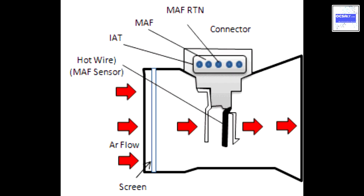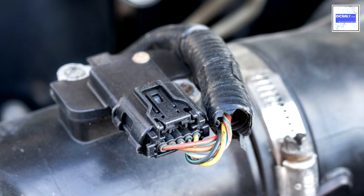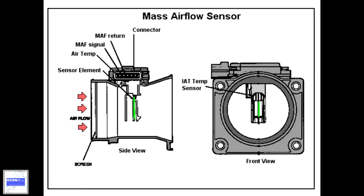A problem with the air flow sensor could also alter the shifting pattern of the automatic transmission. When the air flow sensor signal varies from the expected range, the PCM records a fault and stores the corresponding trouble code, illuminating the check engine light on the dash. This trouble code can be retrieved with a scan tool.